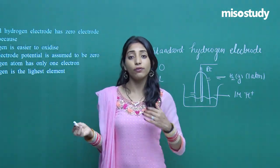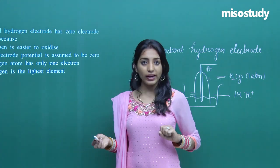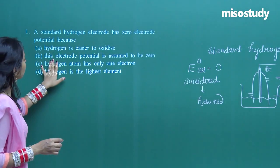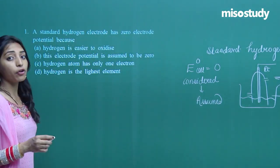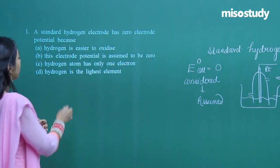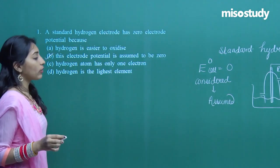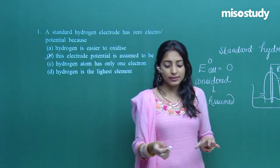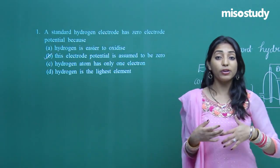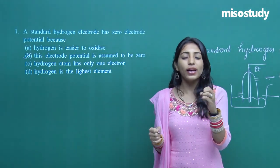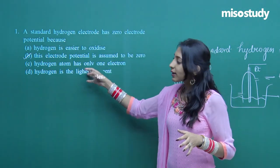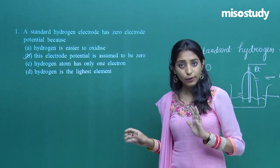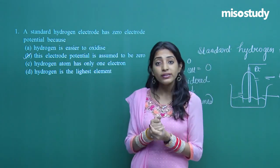The E° is not actually zero — it is assumed to be zero. We assumed it to be zero and then calculated the potentials for all other half-cells. So the correct answer is: the standard hydrogen electrode has zero electrode potential because this electrode potential is just assumed to be zero.